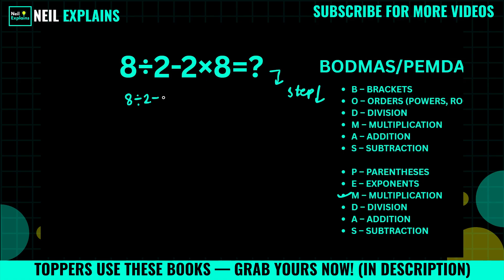This is the first step. After multiplication, we can see division is next, so we will divide this part: 8 divided by 2. What will it become? 8 divided by 2 will become 4, and we will write it down as 4 minus 16.